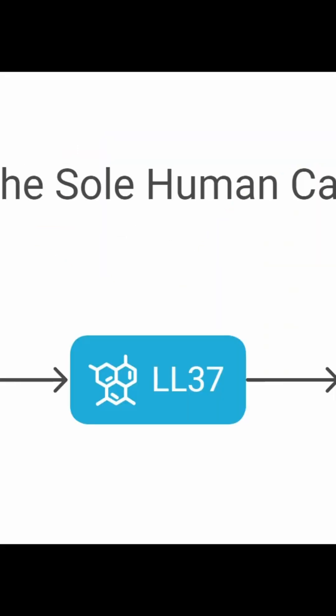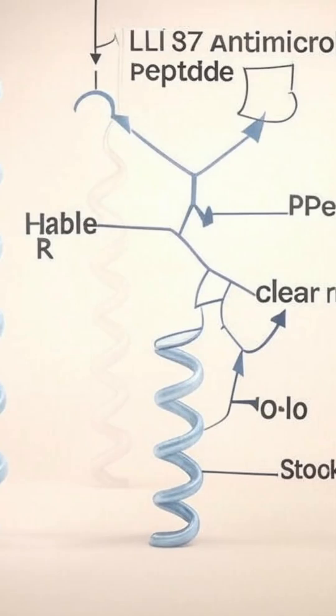Exactly is this molecule? Okay, so LL37 is the only member of the human catholicidin family of antimicrobial peptides. The only one? The only one in humans, yes.